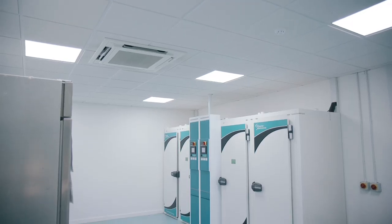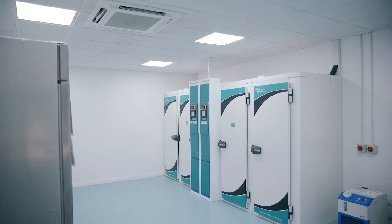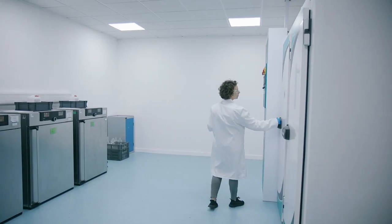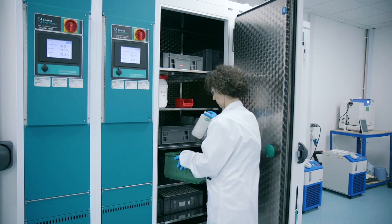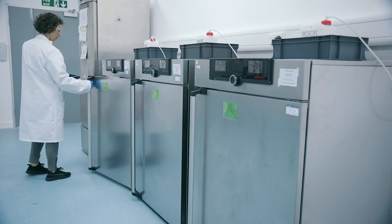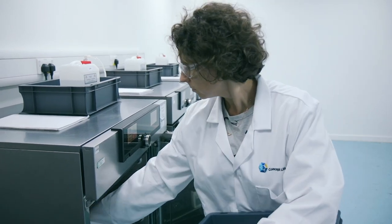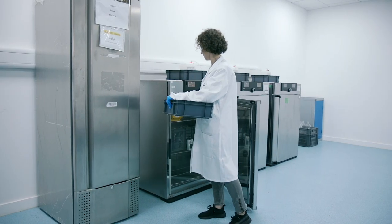This is our storage stability suite. Floor-to-ceiling reach provides plenty of capacity at the standard ICH long-term and accelerated conditions, and we have several smaller cabinets to cover a wide range of other conditions. All cabinets are fitted with alarms, constantly monitored, and supported by an emergency generator.